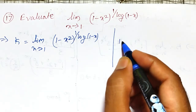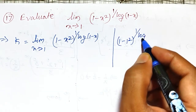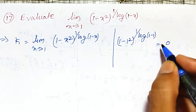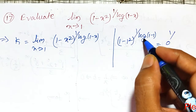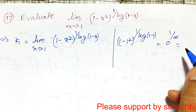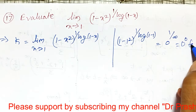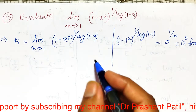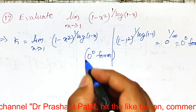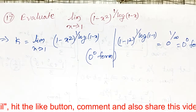Substituting x equal to 1: 1 minus 1 squared raised to 1 divided by log(1 minus 1). That gives 0 raised to 1 divided by log 0. Since log 0 is negative infinity, 1 divided by negative infinity is 0. Therefore this is in the 0 raised to 0 form — very interesting.